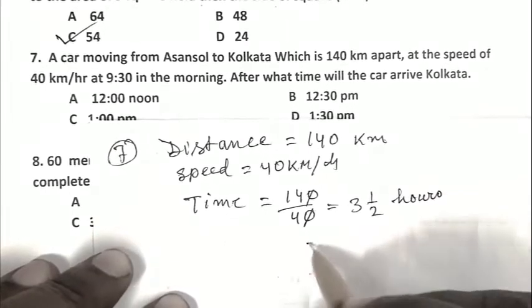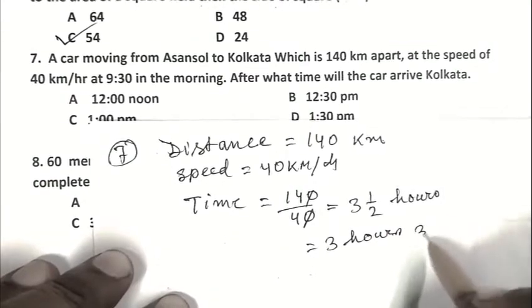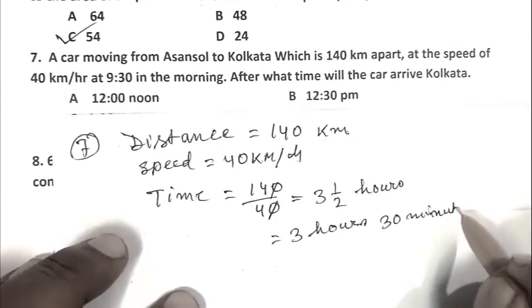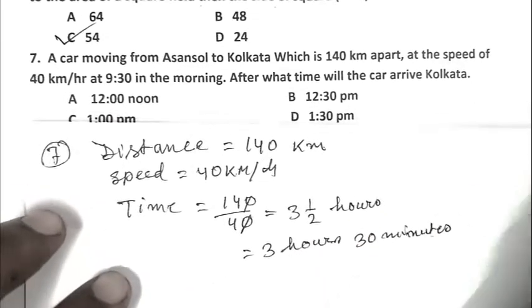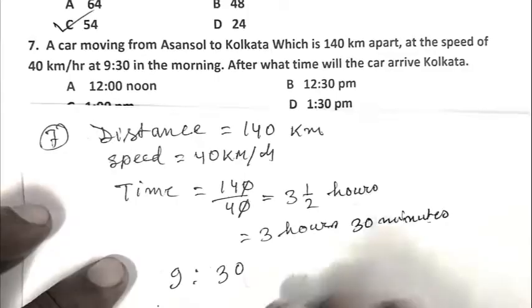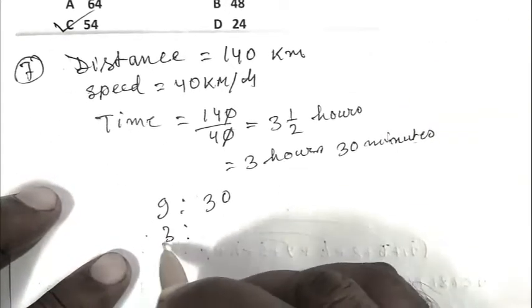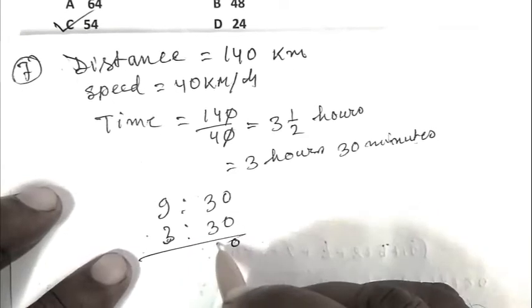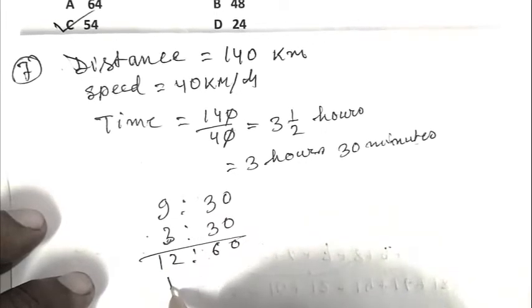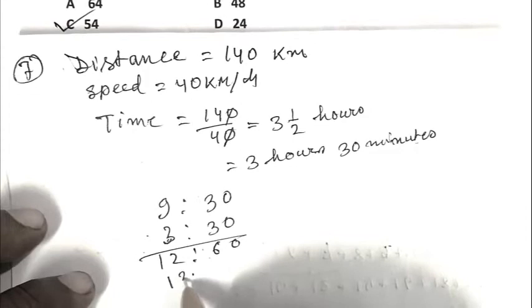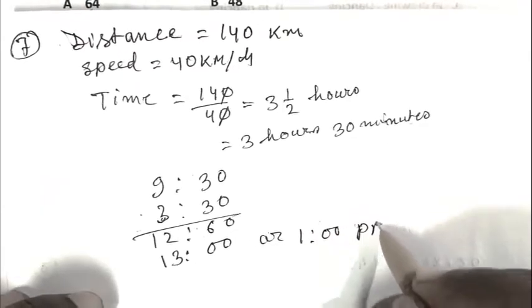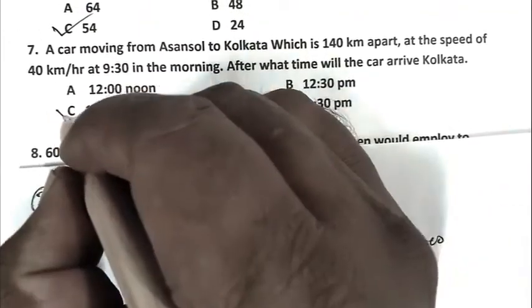Time is 140 upon 40, that is 3 and a half hours, that is 3 hours 30 minutes. We add 3 hours 30 minutes to 9:30 a.m., so the answer is 13:00 or 1 p.m. C is the right answer.